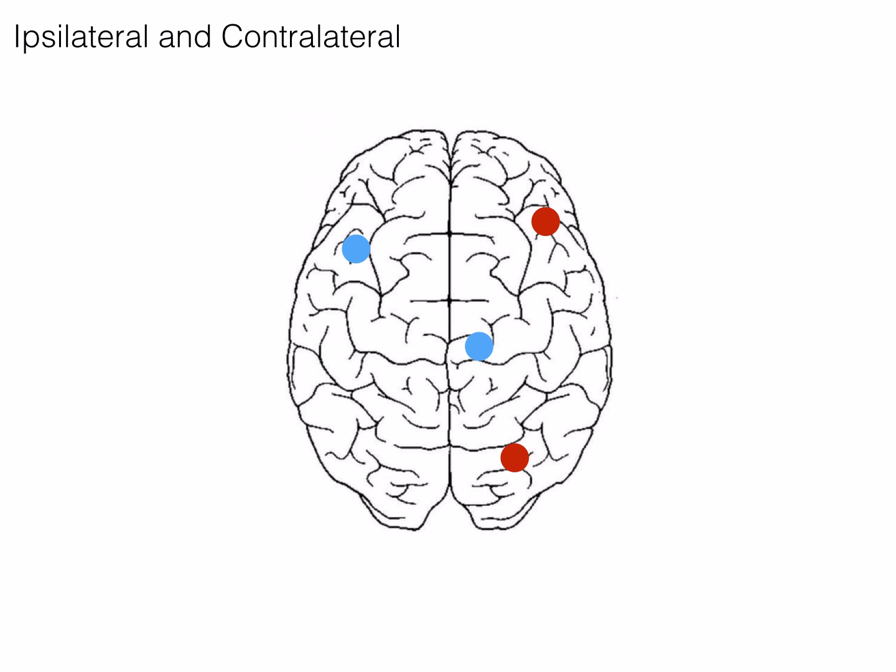When describing two structures relative to each other, it is convenient to describe which half of the brain these structures occupy. Structures are ipsilateral if they are on the same side of the brain. Therefore, the two red dots are ipsilateral. Additionally, contralateral structures are on opposite sides of the brain. The two blue dots would therefore be contralateral.